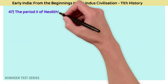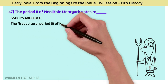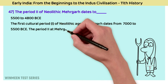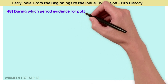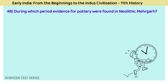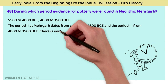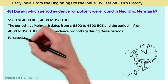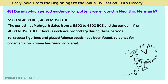Question 47: The Period 2 of Neolithic Mehrgarh dates to? The answer is 5500 to 4800 BCE. The first cultural period of the Neolithic age at Mehrgarh dates from 7000 to 5500 BCE. Period 2 of Mehrgarh dates from 5500 to 4800 BCE, and Period 3 from 4800 to 3500 BCE. There is evidence of pottery during these periods; terracotta figurines and glazed faience beads have been found, along with ornaments.